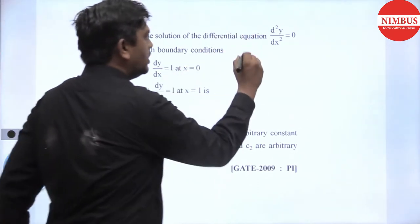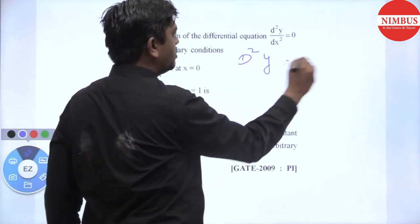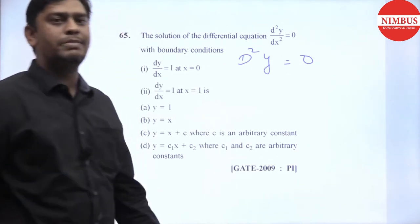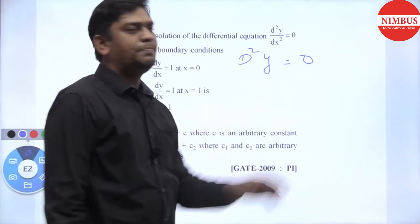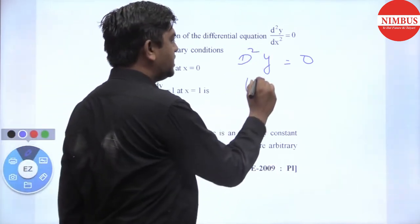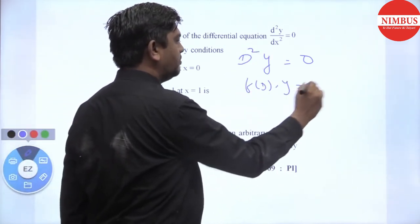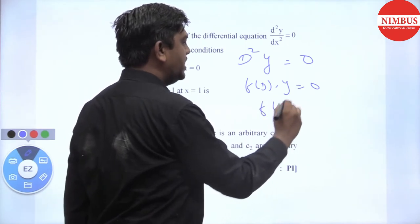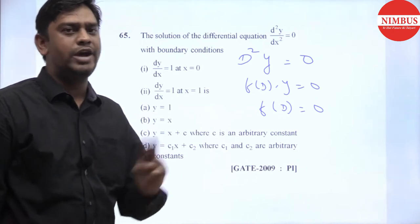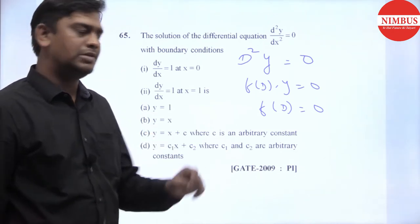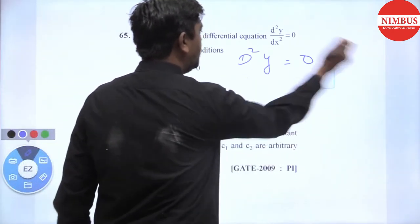This is d²y = 0, so d/dx which is a differentiating operator, if equal to 0, then the PI value is 0. The auxiliary equation is f(D)·y = 0, so the equation is f(D) = 0, that is D² = 0. So the two values are 0, 0. The roots are real and repeating roots.